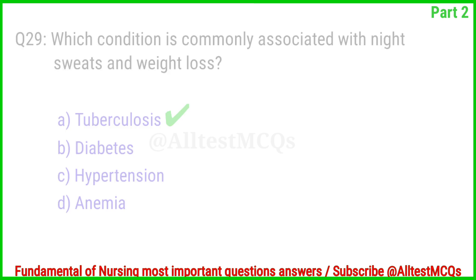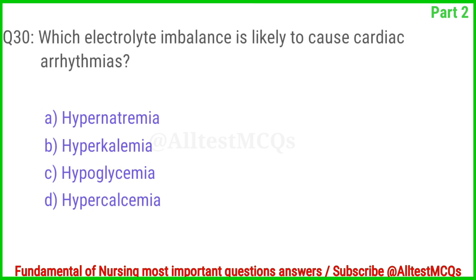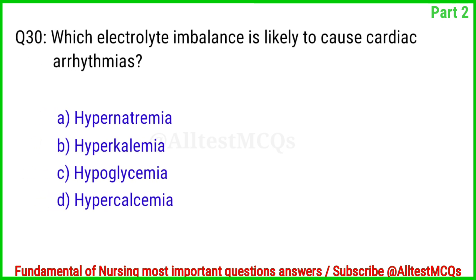Question No. 30. Which electrolyte imbalance is likely to cause cardiac arrhythmias? The right answer is Option B: Hyperkalemia.